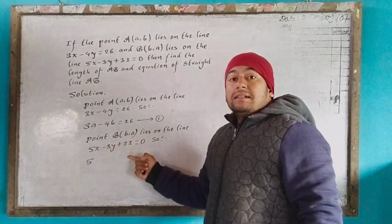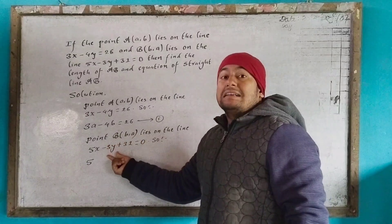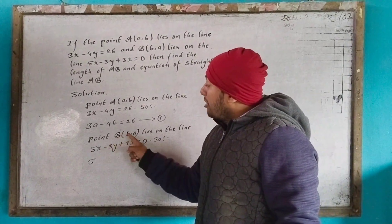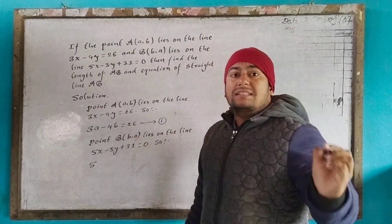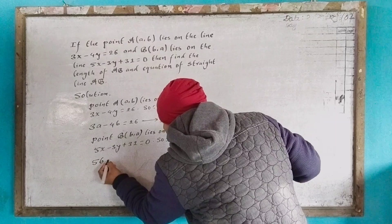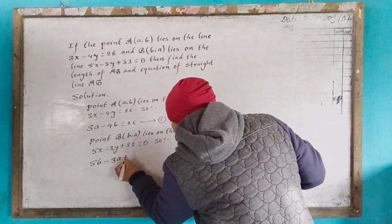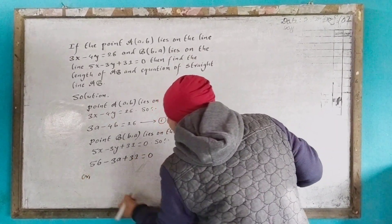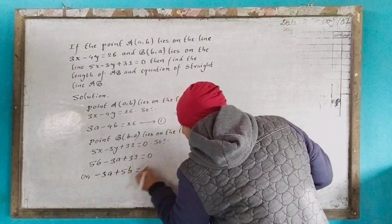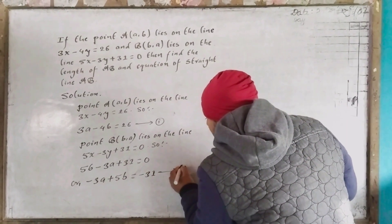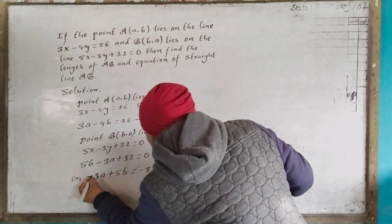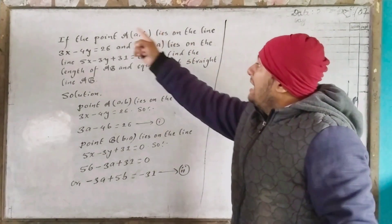This is true — the point lies on the line, it is satisfied. Putting the x and y coordinates of the point into the equation: 5a minus 3b plus 31 equal to 0, giving minus 3a plus 5b equal to minus 31. This is equation 2.